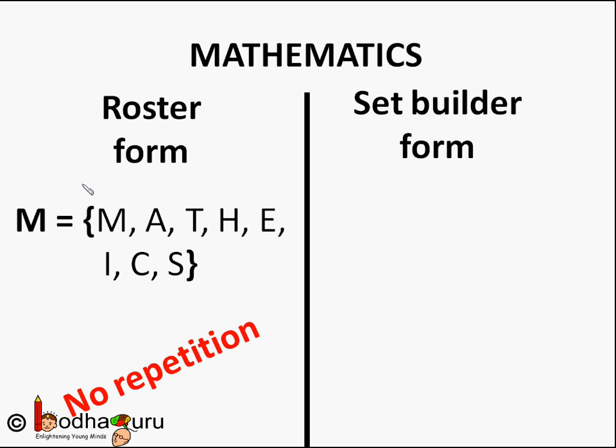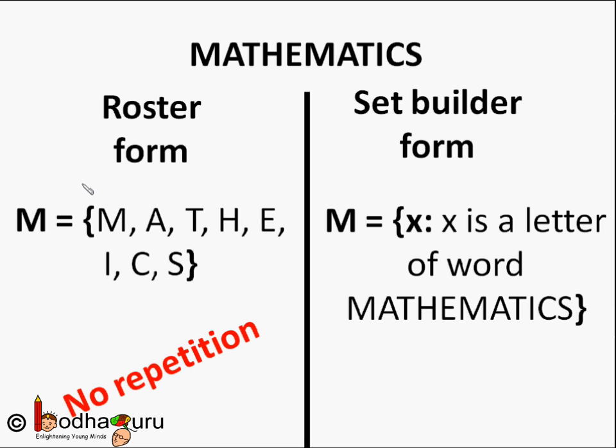So in roster form it will be written as set M equals curly brace M, A, T, H, E, I, C, S, curly brace close. We can write the same set in set builder form like this: M equals X colon X is a letter of the word mathematics. This means M is a set of elements X such that X is a letter of the word mathematics. The concept of set is heavily used in mathematics, science, and in our daily life to make collections of similar objects. We will learn more about it in the next lesson.